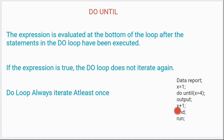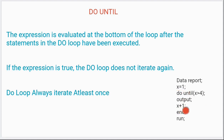So the statement is x plus one. What it is telling us: it will first execute x plus one. Then it will check the expression. The value of x is one. So one plus one is two — because it will first execute the statement. So one plus one is two, now it will go to the expression.